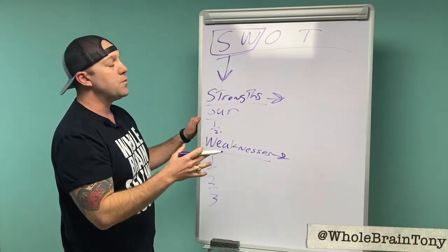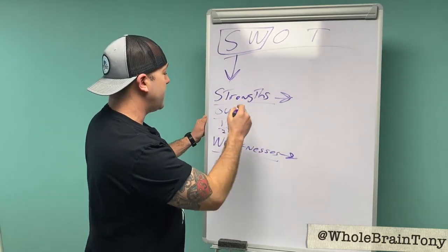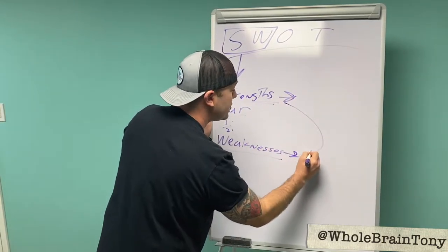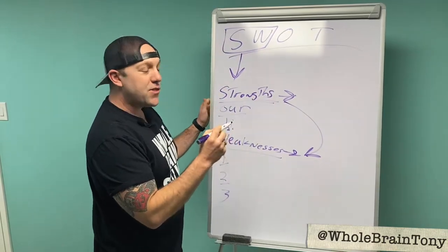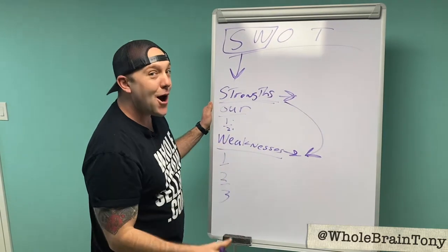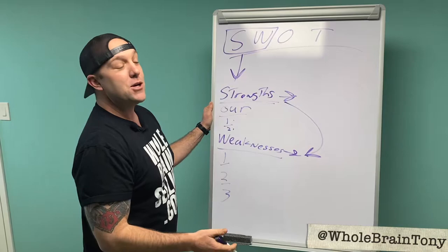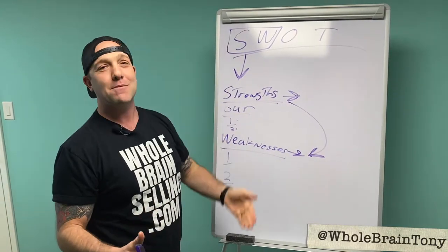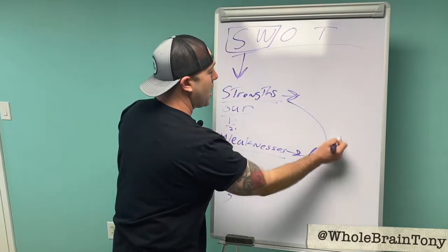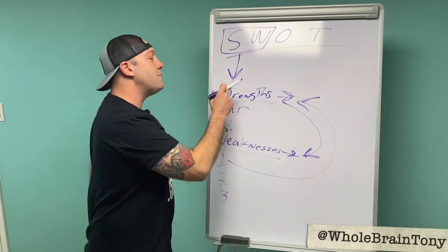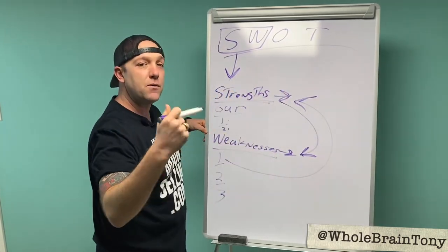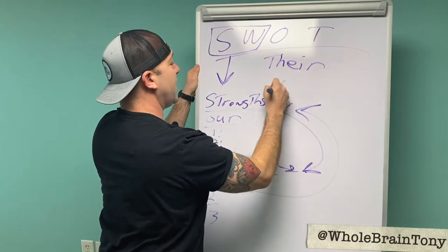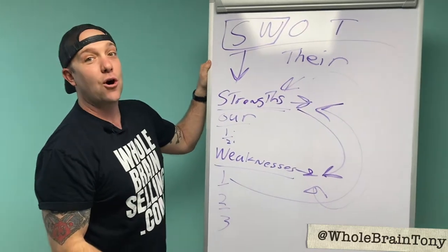Here's the key of how you use this and how you prepare — next level, playing chess instead of checkers. You need to consider how a competitor is going to take your perceived strengths and turn those into weaknesses. Conversely, we need to think about how we can take our weaknesses — because you know the competitor is going to bring them up — and turn them into strengths. Too many times a salesperson wants to bury their head in the sand. Actually, I'm going to bring those up before the competitor does. Next level is doing the same thing with them: what do they think their perceived strengths are, and can I take their strengths and turn them into perceived weaknesses?